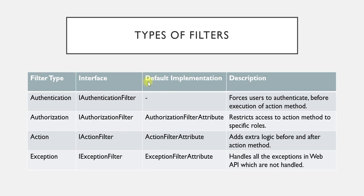Now let us see what types of filters are available in ASP.NET Web API. There are four types of filters, listed here in the order of their execution. If your application implements all these filters, they execute in this order. The columns shown are: filter type, interface, default implementation, and description.